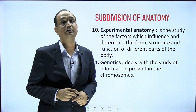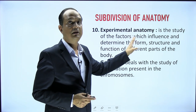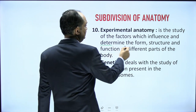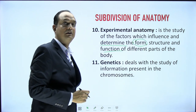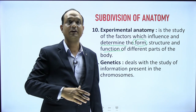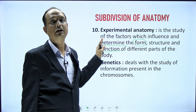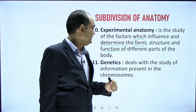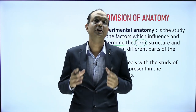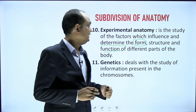Experimental anatomy is the study of the factors which influence and determine the form, structure, and functions of different parts of the body through experiments and research. Lastly, genetics is also part of anatomy, where we study information related to chromosomes. In this way, anatomy is subdivided into many different areas.